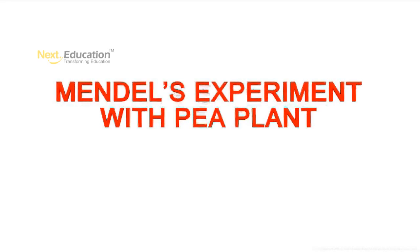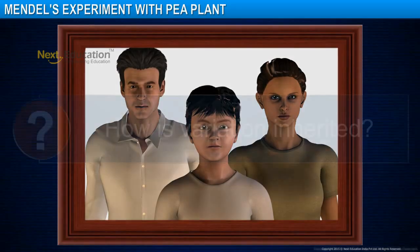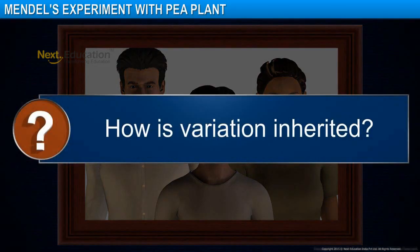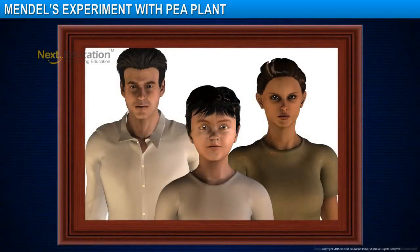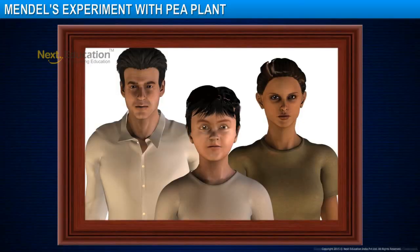In this module, you will learn about Mendel's experiment with pea plants. How is variation inherited? Let's see how variation takes place and how it is inherited from one generation to another.